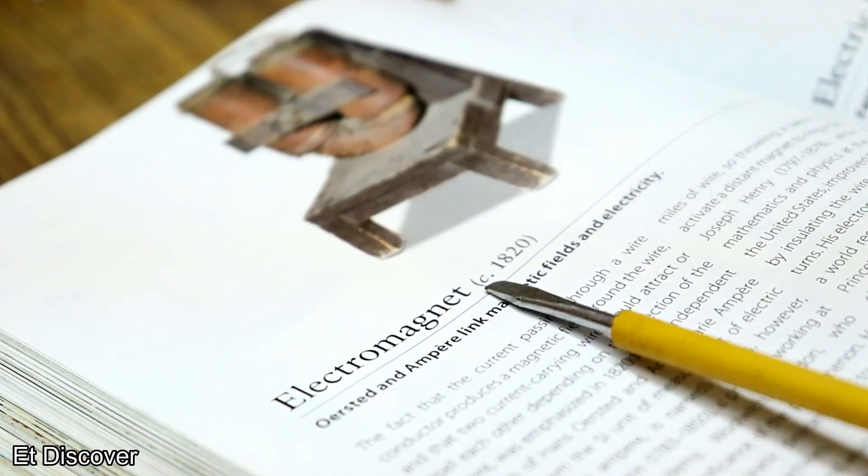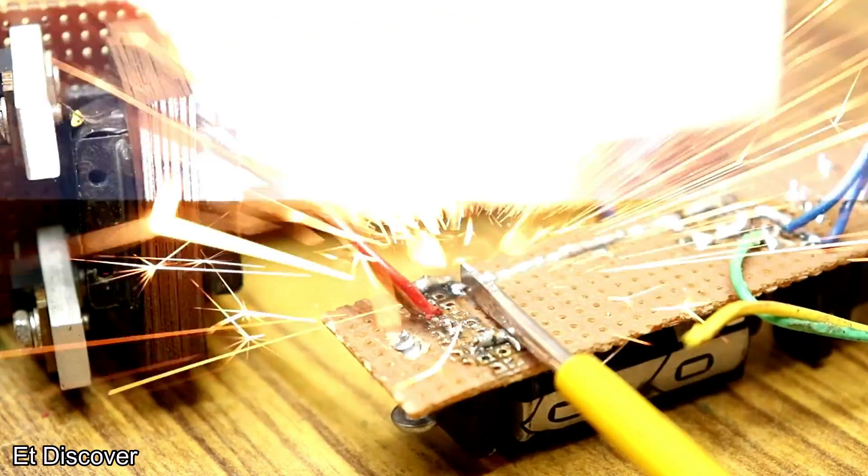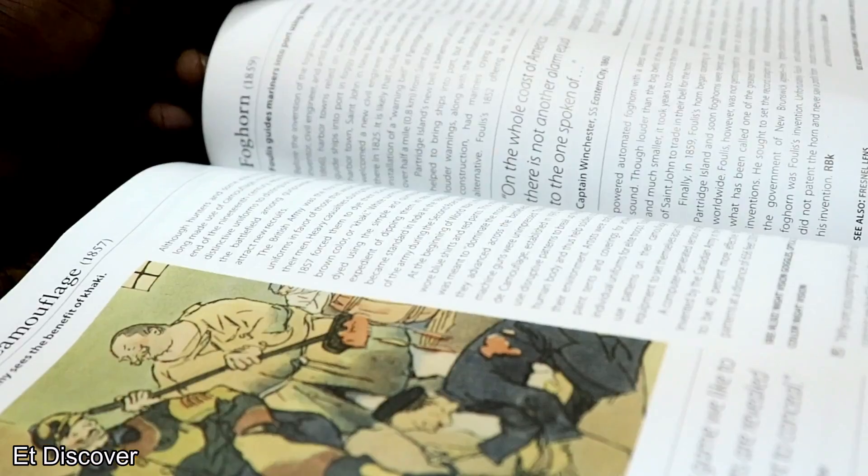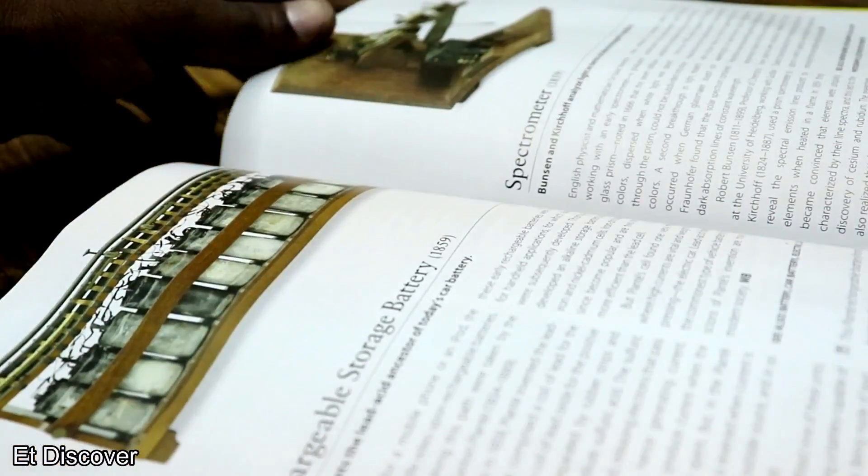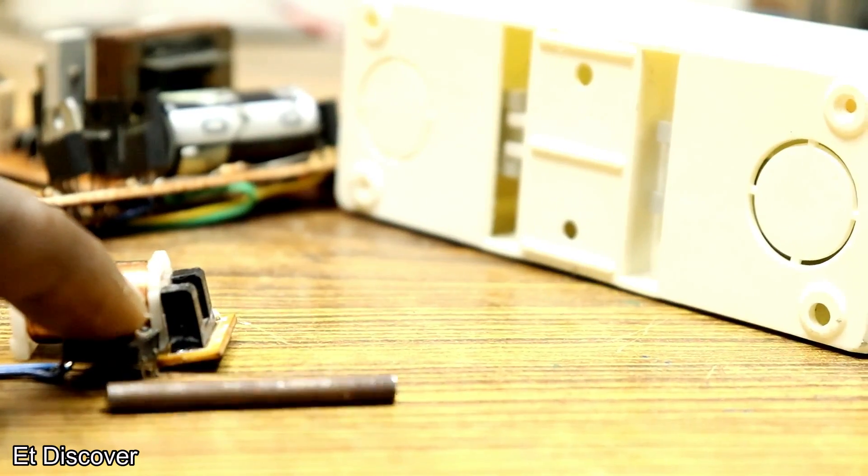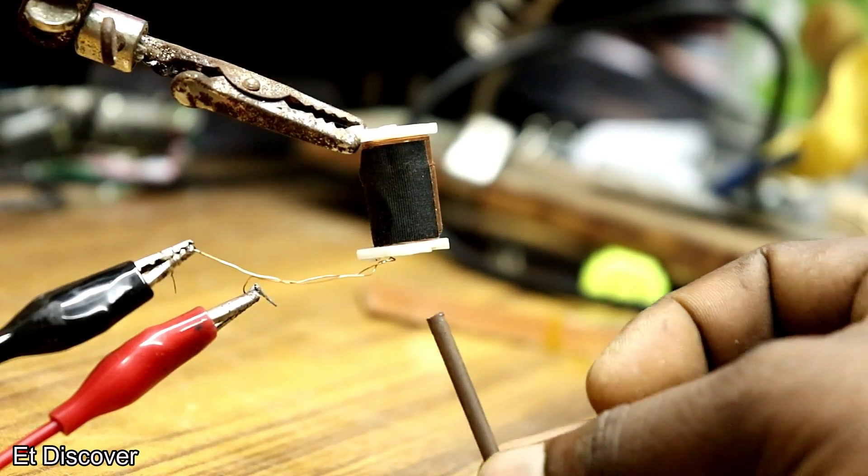This video is about how to make a coil gun, and here high voltage has been used that can kill you. This is an educational video. Don't try this at home. See and have fun. The coil gun depends entirely on the power of magnetism.